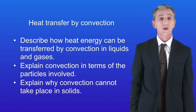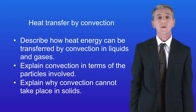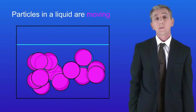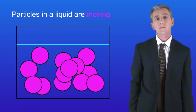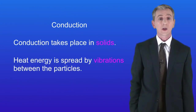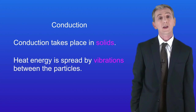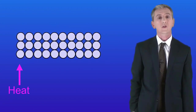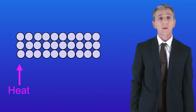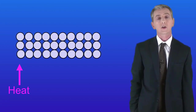At the end of this video you should be able to describe how heat energy can be transferred by convection in liquids and gases, explain convection in terms of the particles involved, and explain why convection cannot take place in solids. Let's recap how particles are arranged: in a solid all the particles are tightly packed together and they cannot move, they can only vibrate. Particles in a liquid are still close together but they are moving. Particles in a gas are very far apart and are moving very rapidly. Conduction takes place in solids and the heat energy is spread by vibration between the particles. So solids are often really good conductors.